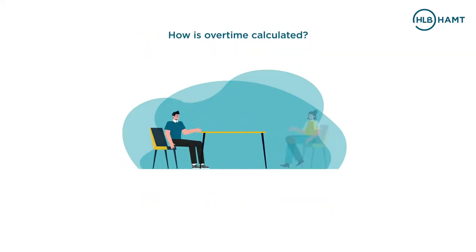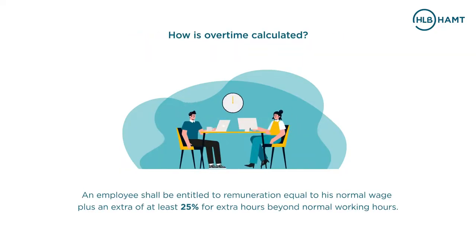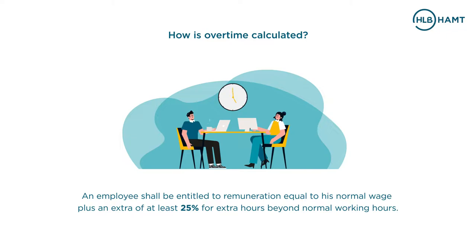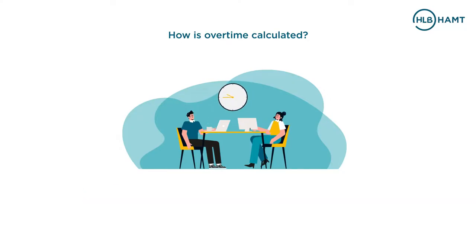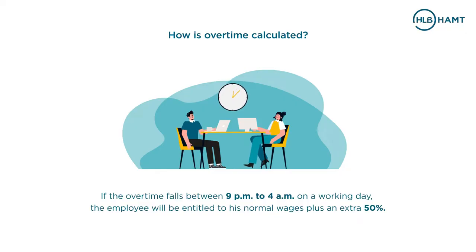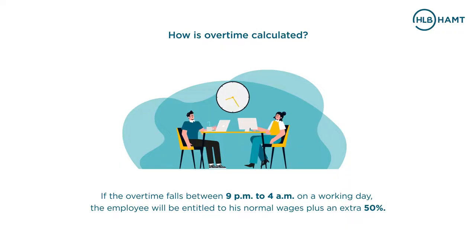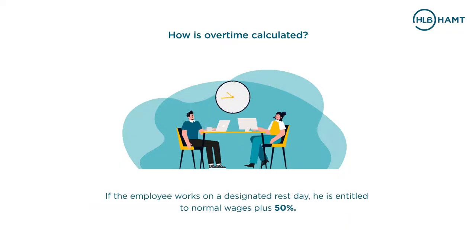How is overtime calculated? An employee shall be entitled to remuneration equal to his normal wage plus an extra of at least 25% for extra hours beyond normal working hours. If the overtime falls between 9 p.m. to 4 a.m. on a working day, the employee will be entitled to his normal wages plus an extra 50%. If the employee works on a designated rest day, he is entitled to normal wages plus 50%.